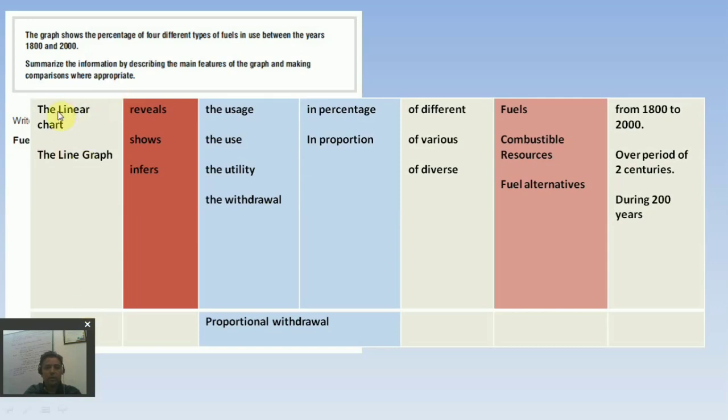Here is a table which I have made so you can use these following combinations to explain the task. The linear graph or line graph reveals or shows the usage, the use, the utility, the withdrawal in percentage, in proportion, or proportional withdrawal of different fuels, of various combustible resources, of diverse fuel alternatives from 1800 to 2000, over the period of two centuries, or during 200 years.